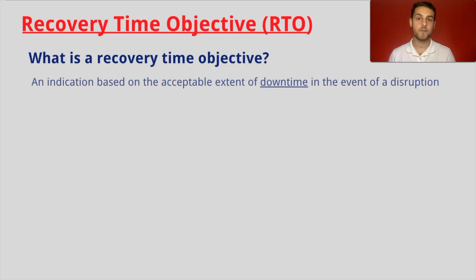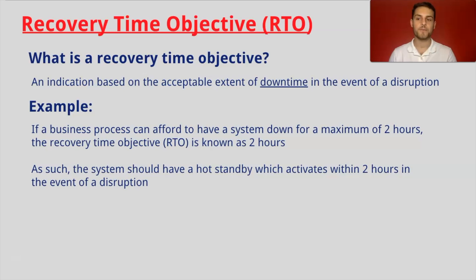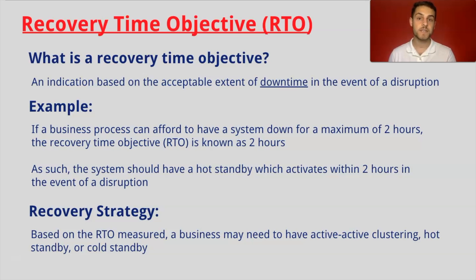Recovery time objective can be classified as an indication based on the acceptable extent of downtime in the event of a disruption. For example, if a business process can afford to have a system down for a maximum of two hours, the recovery time objective is known as two hours. As such, the system should have a hot standby which activates within two hours in the event of a disruption. Based on the RTO measured, a business may need to have active-active clustering, a hot standby, or a cold standby.